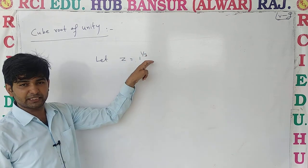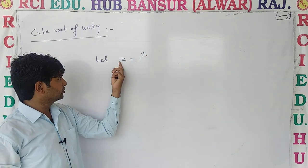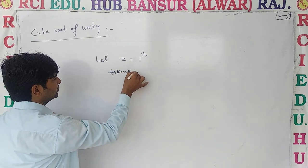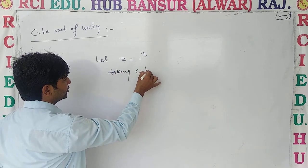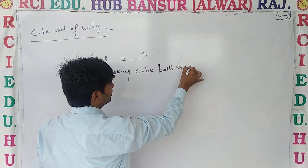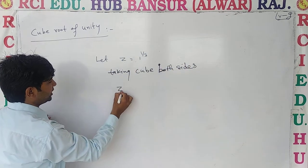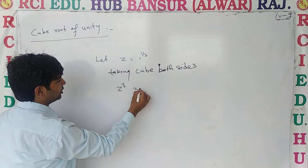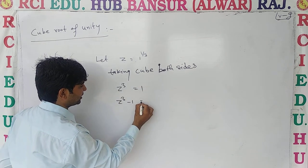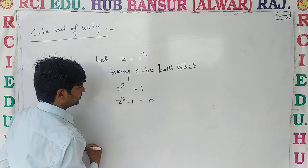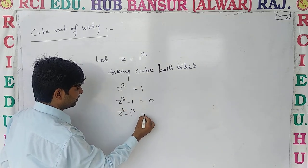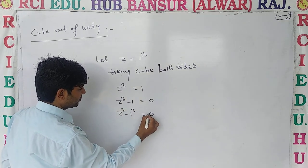So z = 1^(1/3). Taking cube on both sides, we get z cube equal to 1. Then we separate: z cube minus 1 equal to 0. So you can see z cube minus one cube equal to zero.